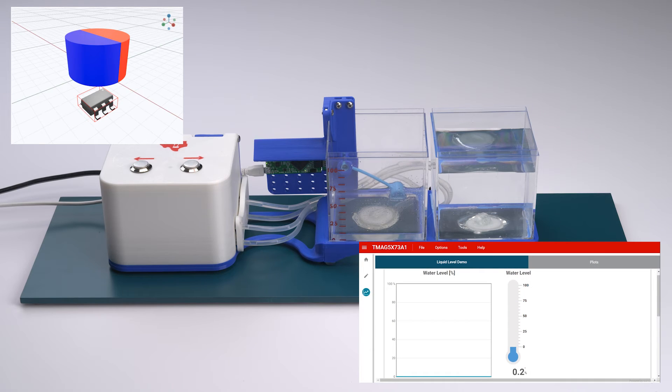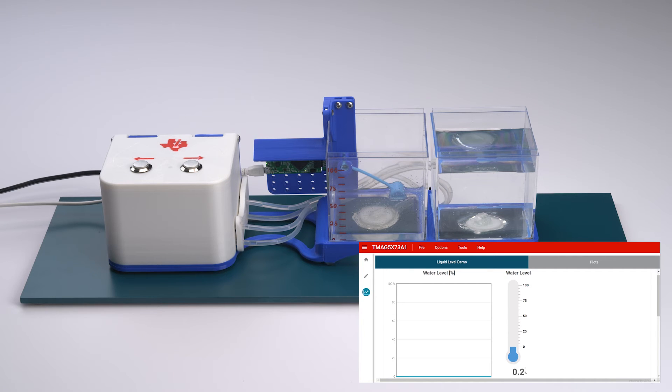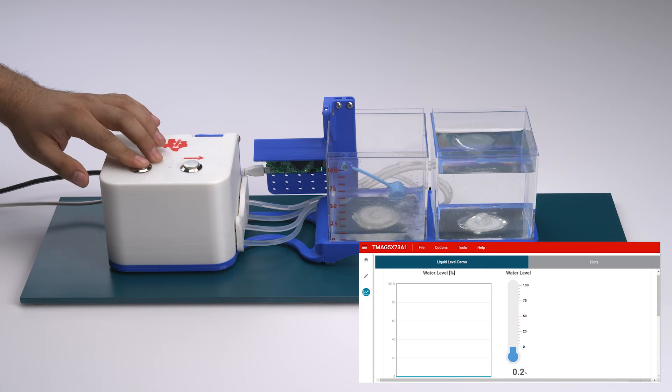With the diametric magnet on axis with the TMAG5273, the device is able to utilize the magnetic field data from X and Y vectors along with a built-in CORDIC functionality in order to calculate the angular position and movement of the magnet. This internal calculation allows the sensor to provide angle data in 0.25 degree steps without any external microcontroller calculations.